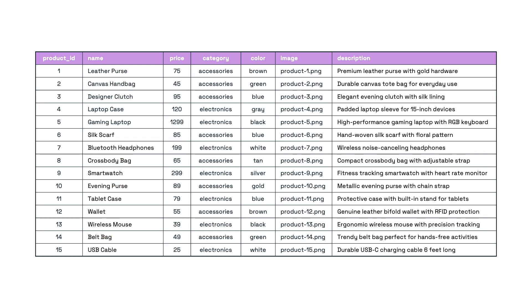And you often want to use these techniques together — searching for, for example, products that are semantically similar but under a particular price. By the way, this is called hybrid search, and we have a video on it. Links in the description below.